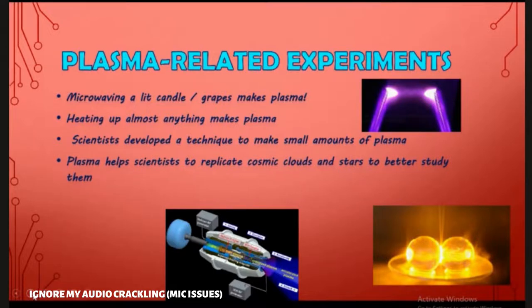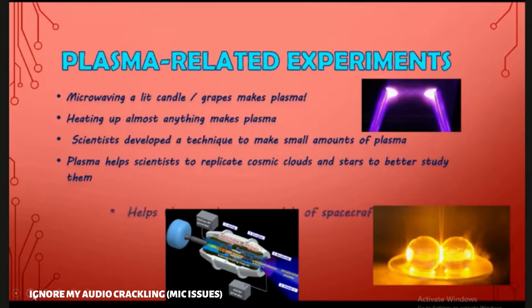Earlier, when all the subatomic particles were floating and when they joined together to create atoms, the electrons were not orbiting these first atoms because everything was still too hot, which means hydrogen and helium, the very first elements, were in the Plasma state. Plasma can also help make new models of spacecraft.